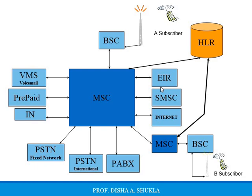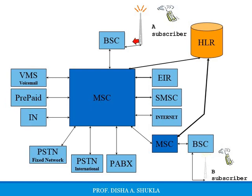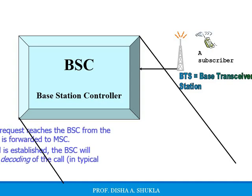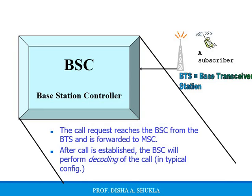Whenever a subscriber initiates a call, its call will be transferred from the BTS to the BSC. The call request reaches the BSC from the BTS and is now going to be forwarded to the MSC. After the call is established, the BSC will perform the decoding of the call. So this is the first step: the subscriber initiates its call via a BTS — the base transceiver station or the tower. From the BTS, the call is forwarded to the BSC, which checks two things: it forwards the call request to the MSC, and after the call is established, it performs decoding.